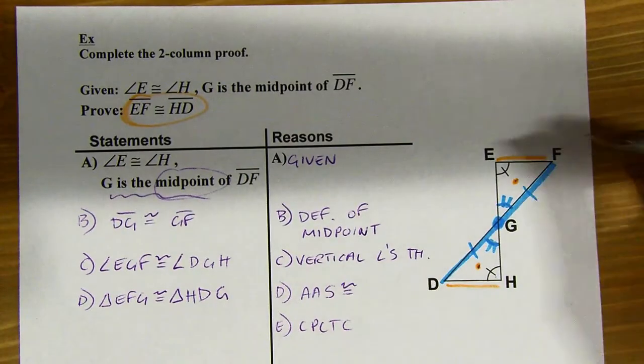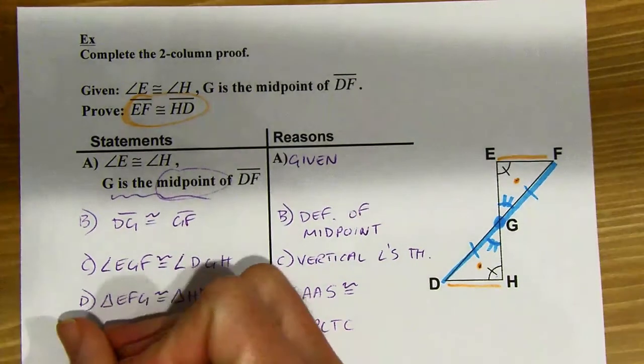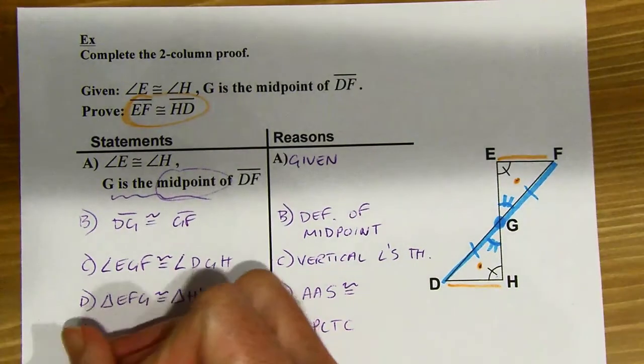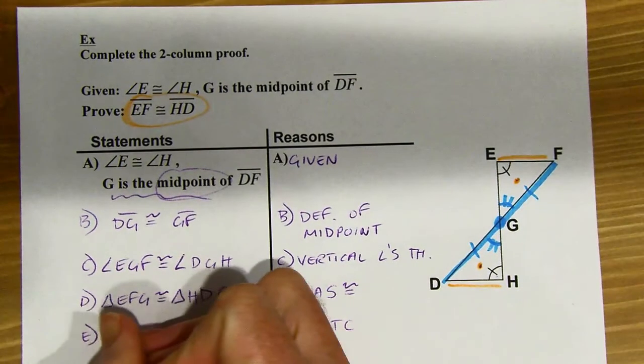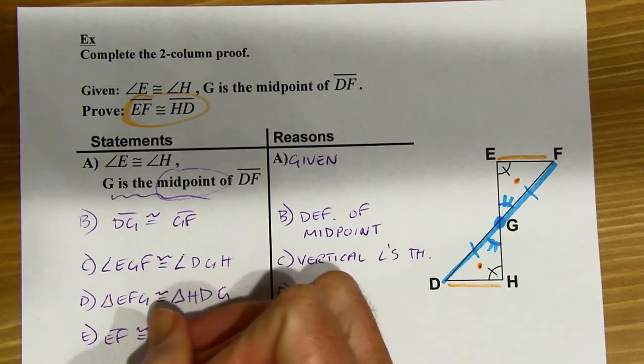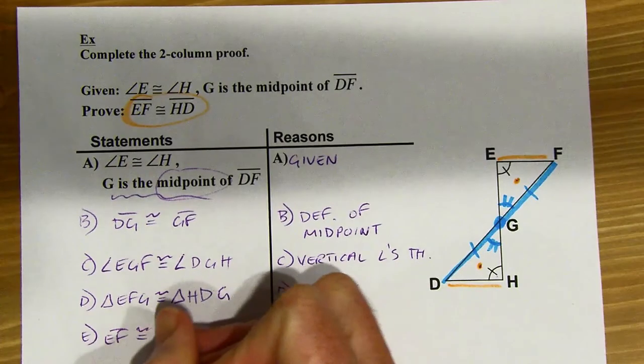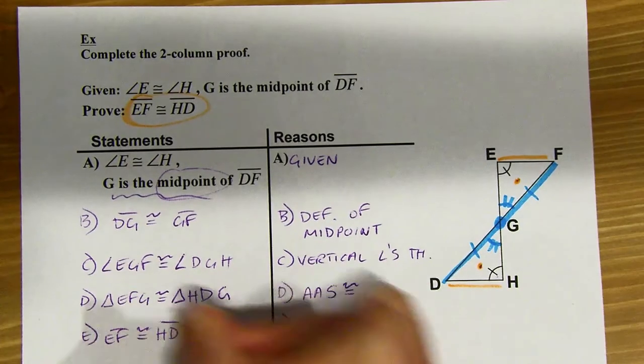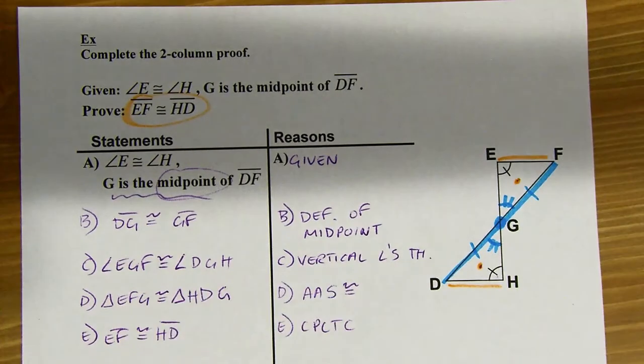What I'm trying to prove is that segment EF and HD are congruent. I can do that because I've shown that the two triangles are congruent, and those would be corresponding parts of those two congruent triangles. Segment EF is congruent to segment HD.